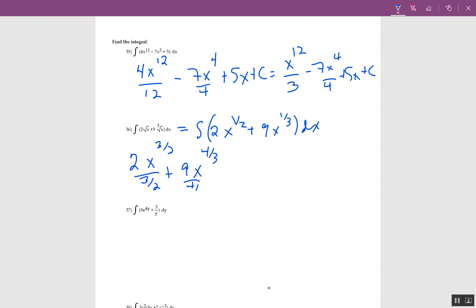The 9x, when I add 1 to 1/3, I get 4 over 3. Divide by 4 over 3 and add c. Flip those over: 2/3 times 2x to the 3/2 and 3/4 times 9x to the 4/3 plus c. Multiply it out: 2 times 2 is 4 over 3 x to the 3/2, and 3 times 9 is 27 over 4 x to the 4/3 plus c.